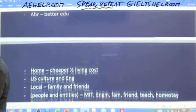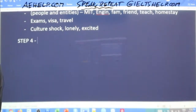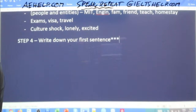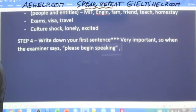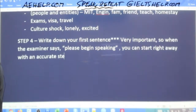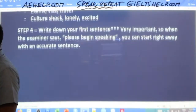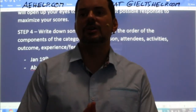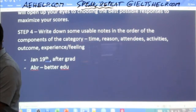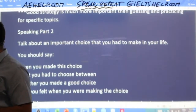This brings us to a very important step — step four: write down your first sentence. When the examiner says 'please begin speaking,' you can start right away with an accurate sentence. Give me your first sentence. For your first sentence, it's always a good idea to refer back to the topic statement: 'Talk about an important choice that you had to make in your life.'